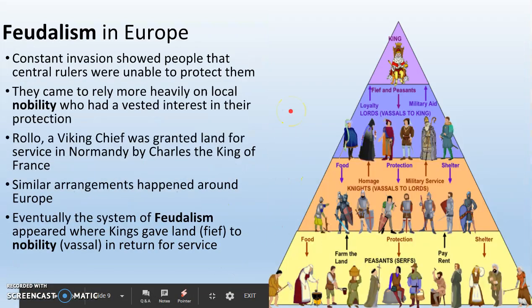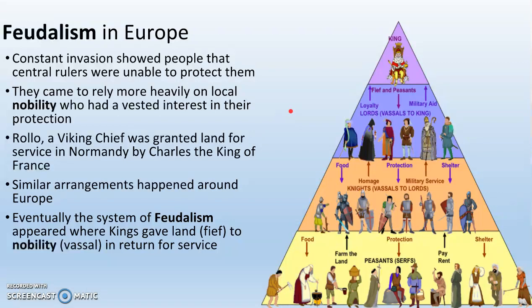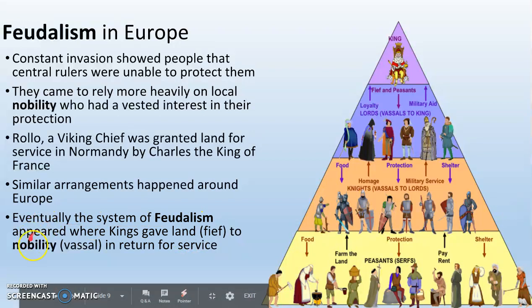Europe is under constant invasion — Vikings in the north, Muslims from the south, Magyars from the east. Everybody is scared. What the average peasant learned is that the king couldn't protect them; he was too far away in Paris or in London. They were getting destroyed by Vikings, Magyars, and Muslims. So they started relying more and more on the local nobility — the local important guys, maybe the richest guys, maybe the guys with the most soldiers — and this is ultimately going to lead to the creation of feudalism.